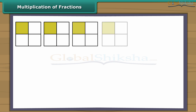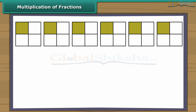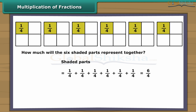Multiplication of Fractions. Look at the picture — all the squares have a shaded part. Each shaded part is one-fourth of a square. How much will the six shaded parts represent together? We can solve this by adding all the parts, or by multiplying the number of shaded parts by each shaded part. Let us discuss multiplication of fractions with a few examples.